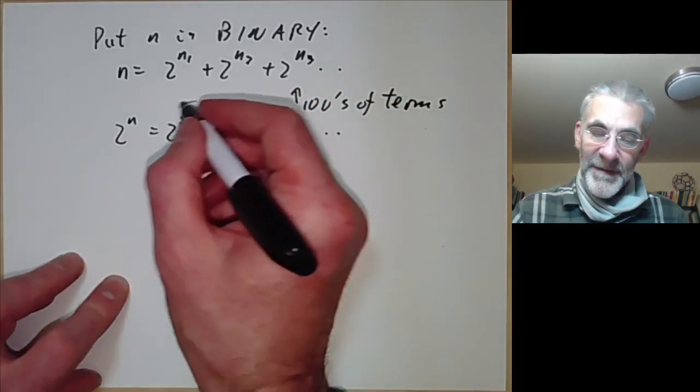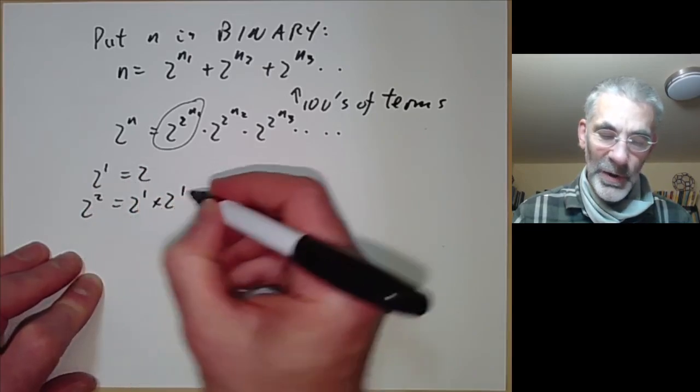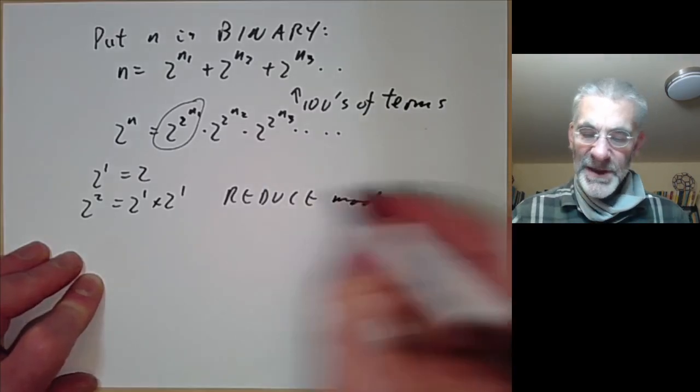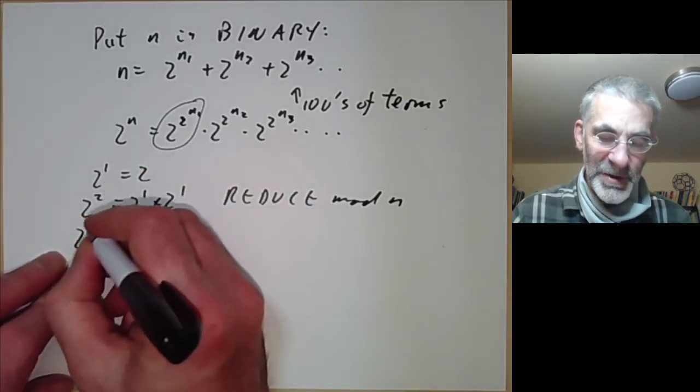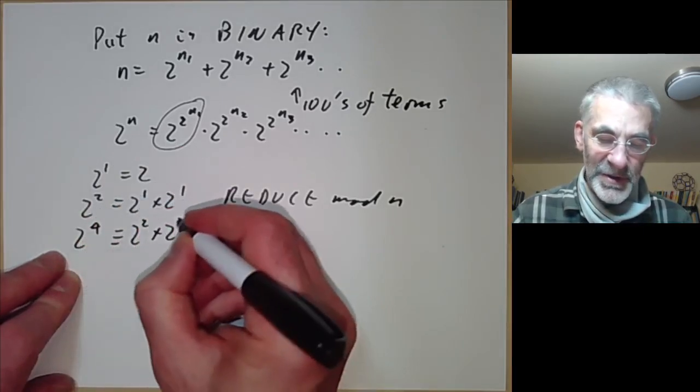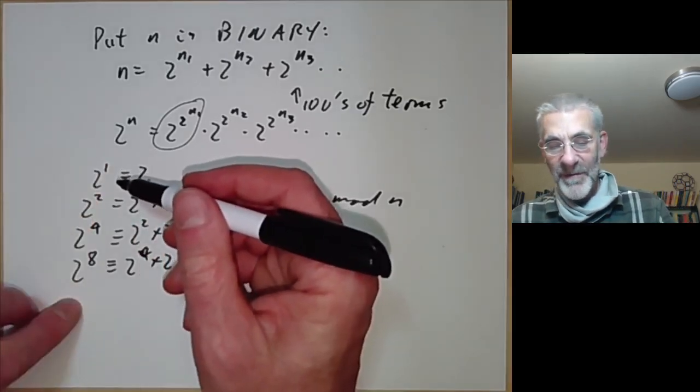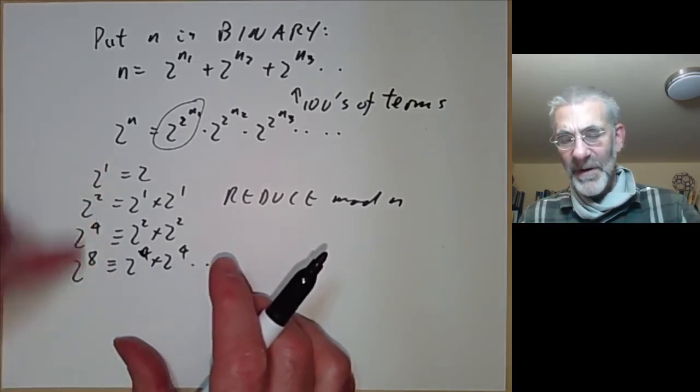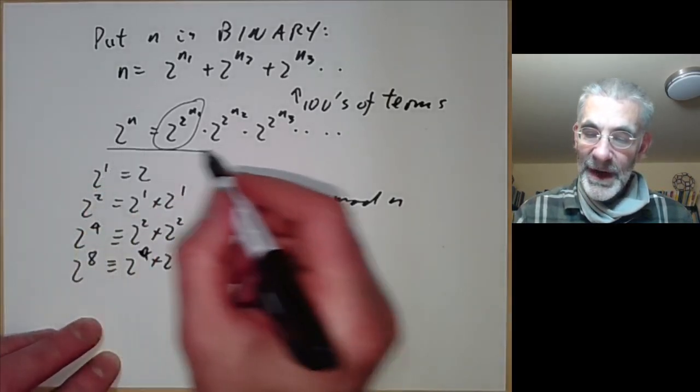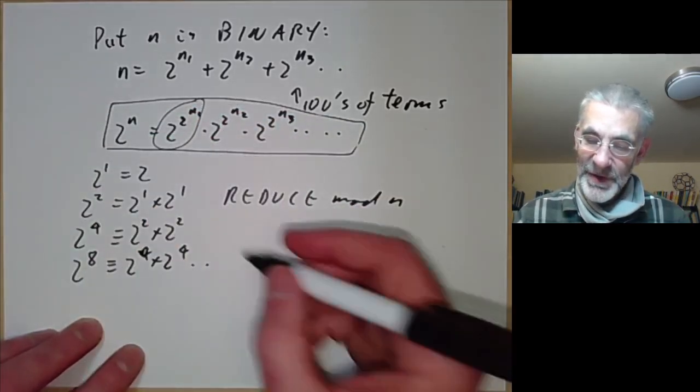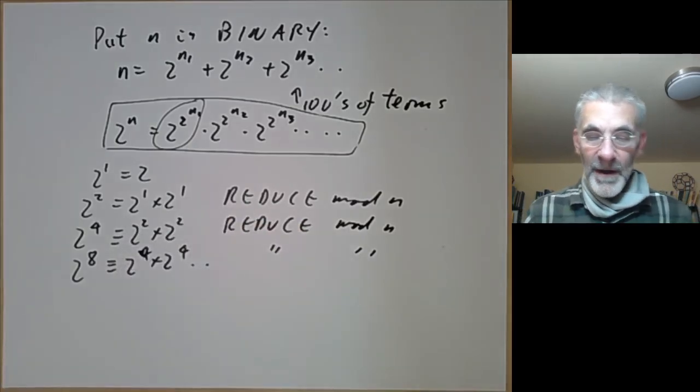And now, how do we work out these factors 2 to the 2 to the n1? Well, we write 2 to the 1 equals 2. 2 squared equals 2 to the 1 times 2 to the 1, and then we reduce mod n. Then we work out 2 to the 4 is equivalent to 2 to the 2 times 2 to the 2. And then we find 2 to the 8 is equivalent to 2 to the 4 times 2 to the 4 and so on. So we first make a table of 2 to the power of 2. And there's going to be a few hundred of these if n is a few hundred digits. And then, once we've got all these, we can work out 2 to the n by doing this calculation and again reducing mod n. We reduce mod n each step here in order to keep these numbers reasonable.